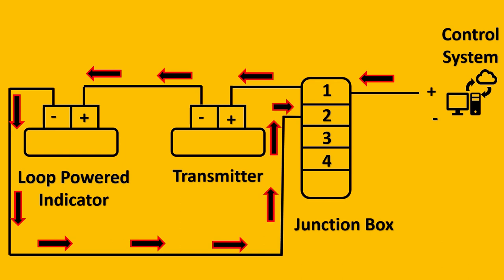That same signal will then pass on to your junction box, and from your junction box it will be back to your control system. So this is the first basic option to do wiring. But there is one issue with this thing. The biggest issue is the connection between the transmitter and the loop power indicator is without the junction box.